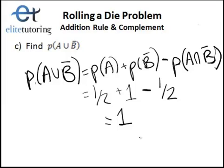The answer is 1, which makes sense because all the outcomes satisfy not B. Any outcome would work to satisfy that union with not B. All of them already satisfy not B, so the union with A didn't even add anything — we already had all outcomes coming from the not B part.